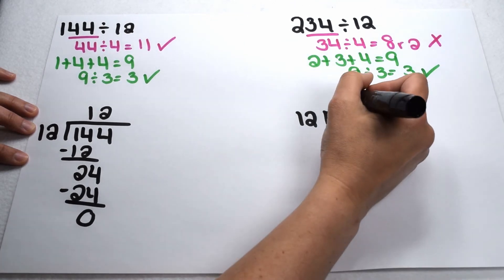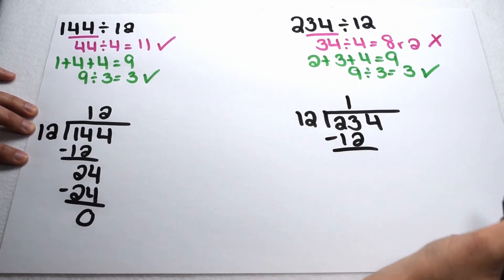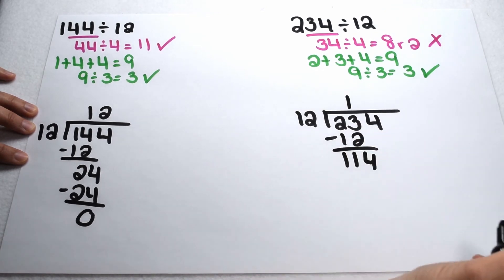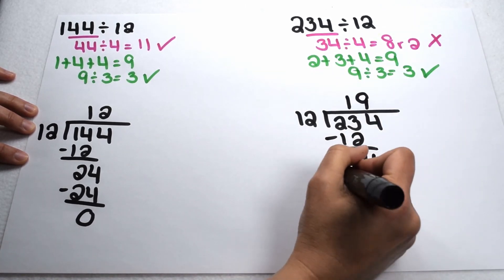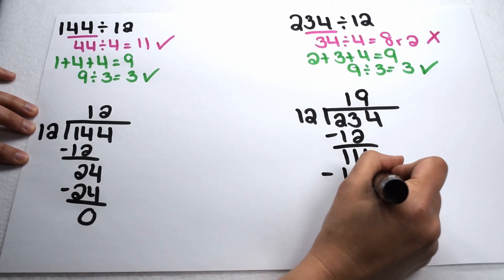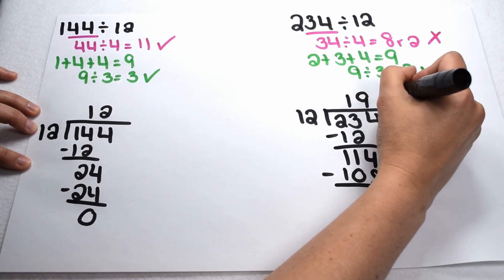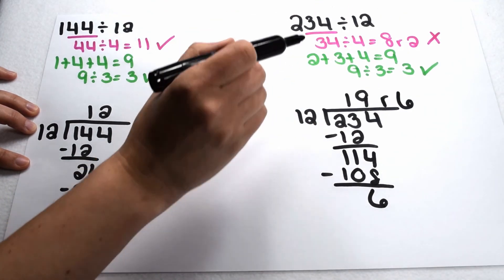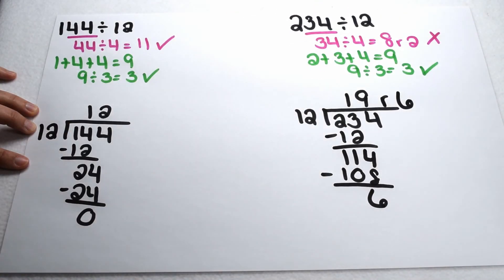Let's test it out. 12 goes into 23 once. Subtract 12 — 23 minus 12 leaves me with 11. Bring down my 4. 12 goes into 114 nine times, minus 108, and that leaves me with 6. So sure enough, since 234 was not divisible by both 3 and 4, we weren't able to divide by 12 without getting a remainder.